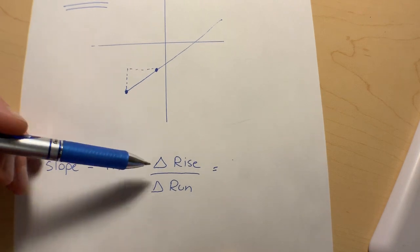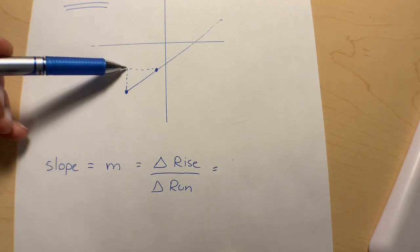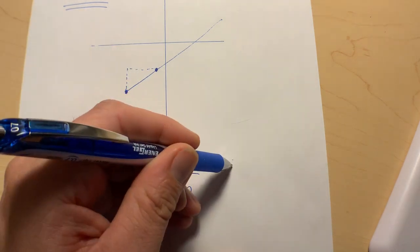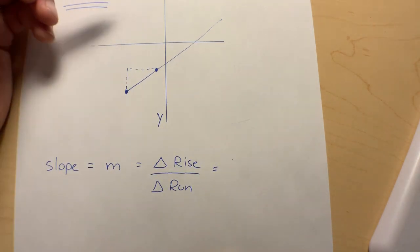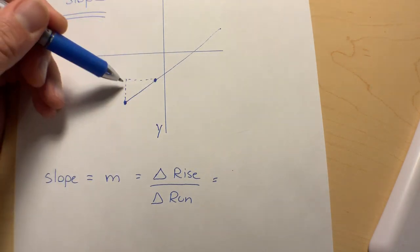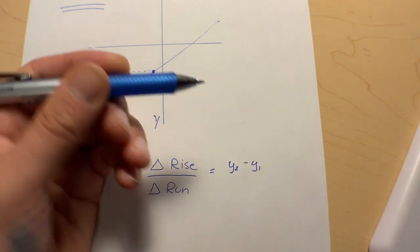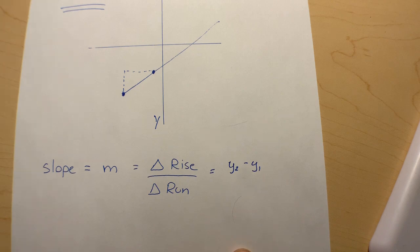An easy way to think about it is: change means subtraction. When we think about the difference of things, we subtract. So this point subtracted from that point will get us the overall change of this up part. Measuring up and down is the y-axis, so this straight up and down line is the y-axis.